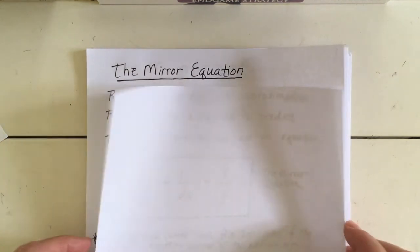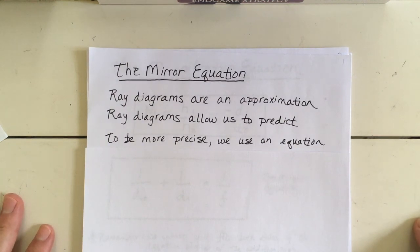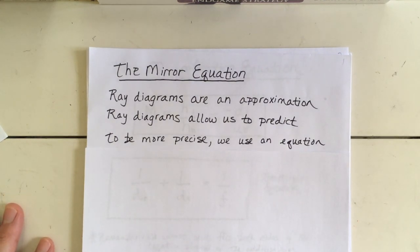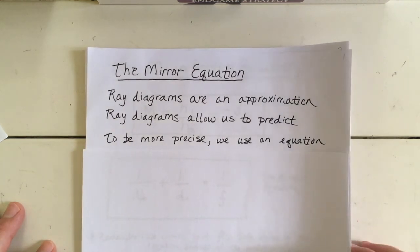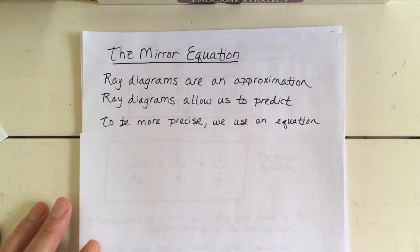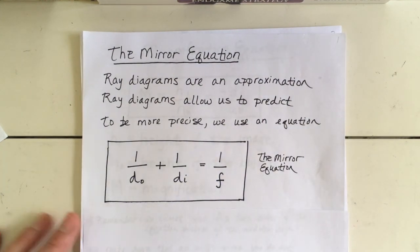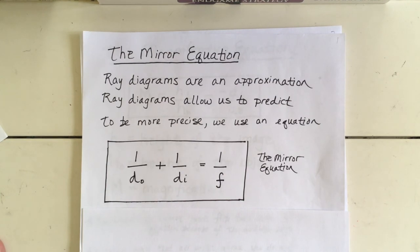To start off with the mirror equation — last time we found a way to draw the location of an image, but it was a little bit of a guess. We didn't know exactly where it was located, how far from the mirror, or exactly what its height was. So this week we're going to talk about an equation we can use to solve where the image is located, what its height is, and so on. The mirror equation says: 1 over the distance to the object plus 1 over the distance to the image is equal to 1 over the focal length.